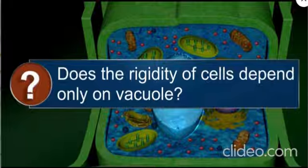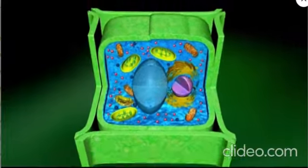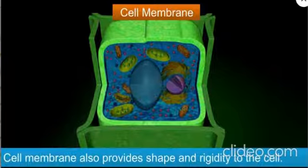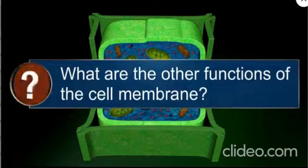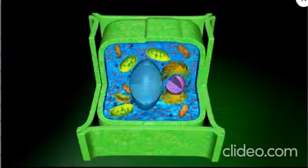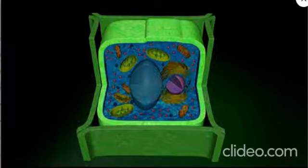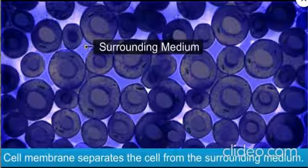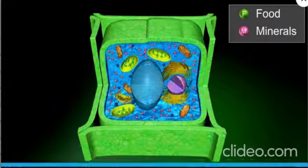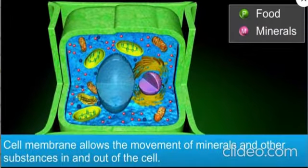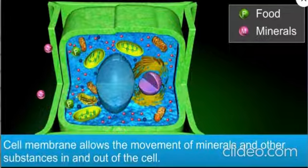Does the rigidity of cells depend only on the vacuole? Not entirely. The cell membrane also helps to provide shape to the cell. The cell membrane, also called the plasma membrane, separates one cell from another, separates the cell from the surrounding medium, and allows the movement of minerals and other substances in and out of the cell.